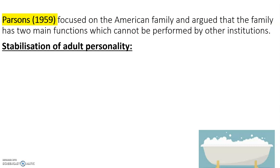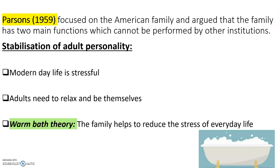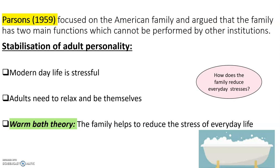Parsons also said families provide the function of stabilisation of adult personalities - you can remember it as SOAP: Stabilisation Of Adult Personality. Modern life is quite stressful, and the family is used as a way to de-stress people. It's a place you can go and vent if you've had a bad day, moan about everything going on. The family is one of the only institutions that can provide this function, Parsons would argue. Think about all the things your family does to help reduce your stress.